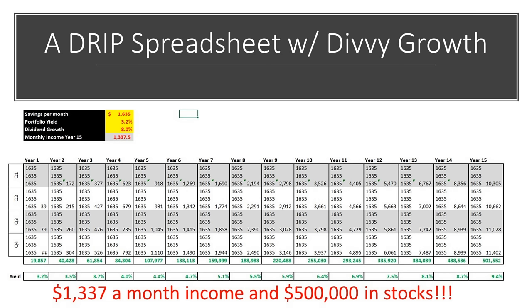You'd have a $500,000 portfolio with $1,337 a month in income. In a fair number of countries around the world, that's enough to retire with. A very effective strategy — we can attest to that with our own Quantigence strategy. This works extremely well when you throw a lot of time behind it.